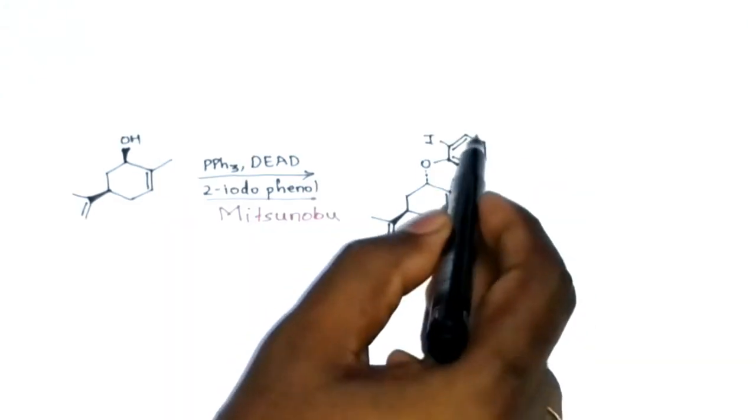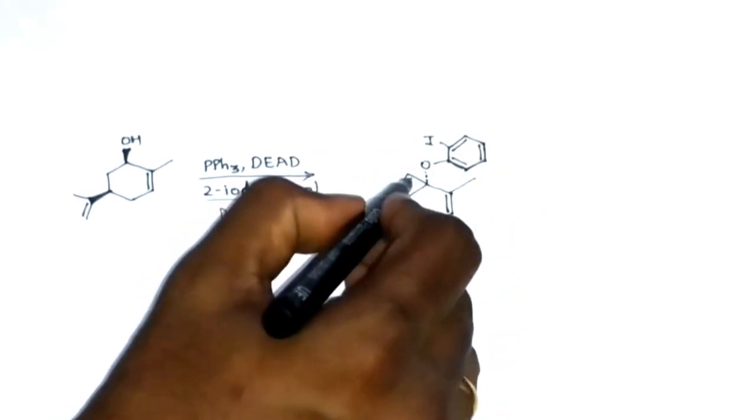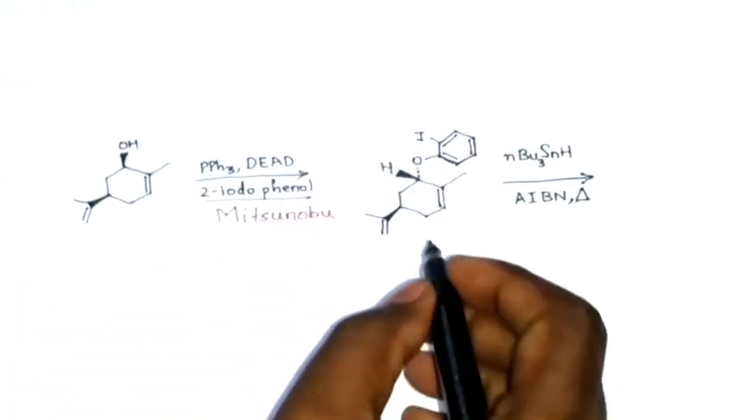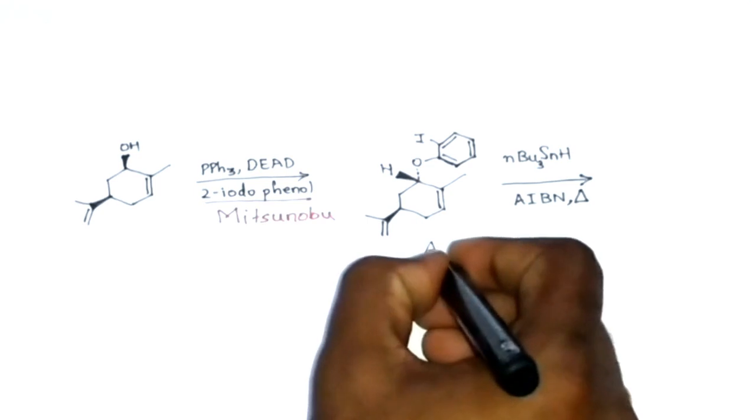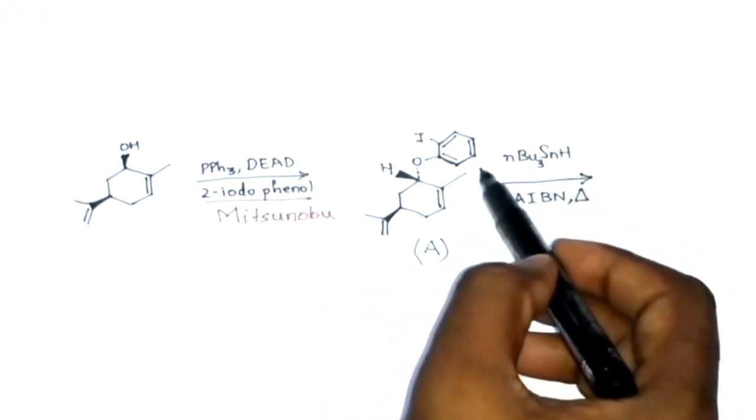Since the iodine group is below the plane of the paper, there will be a hydrogen here which will be above the plane of the paper. This will be your product A, and it will further undergo reaction with this reagent.